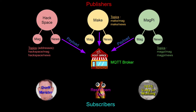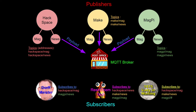On the other end we have subscribers, who receive this information by subscribing to particular topics. For example, Dorfmeister is subscribed to Hackspace magazine and Magpie news. When a payload arrives at the MQTT broker, it automatically sends that message out to the entities that have subscribed to that topic. So if Hackspace/mag publishes a payload, Dorfmeister and '1875 lady in waiting' receive it, but not Resin Chem Tech, because they're not subscribed to that topic.